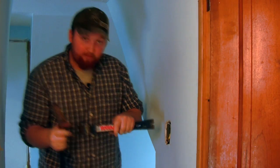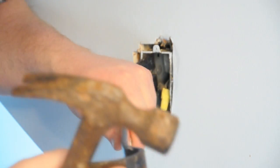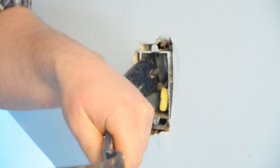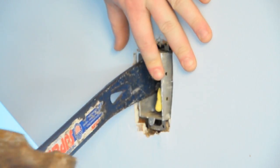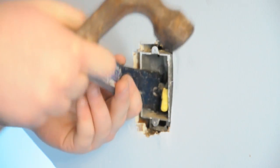Push the box back, take your flat bar, put it inside the box, get underneath the nail. Now give it a nice little turn. Be careful when you do this not to damage your drywall.